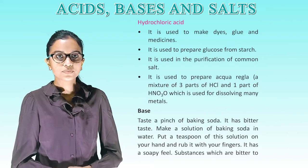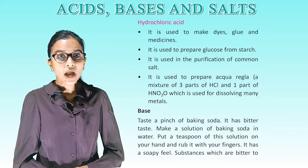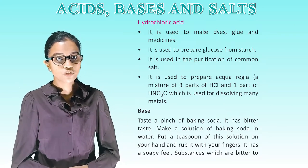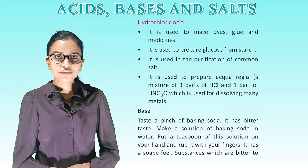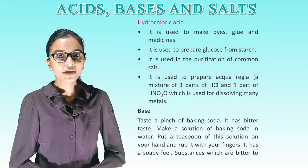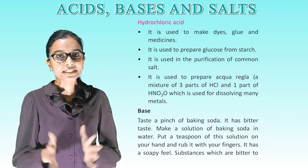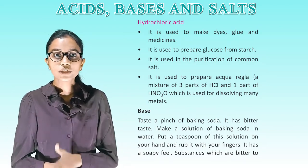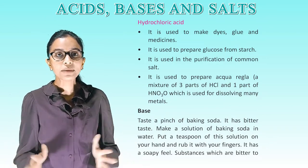Hydrochloric acid is used to make dyes, glue and medicines. It is used to prepare glucose from starch. It is used in the purification of common salt. It is used to prepare aqua regia — a mixture of three parts of HCl and one part of HNO₃ — which is used for dissolving many metals.